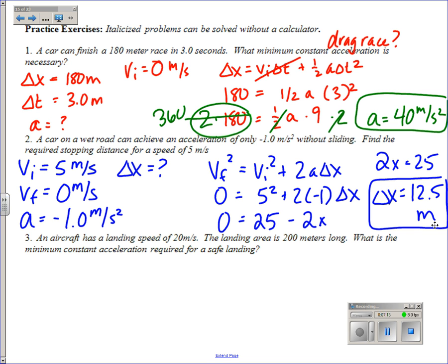Question three: an aircraft has a landing speed of 20 meters per second. The landing area is 200 meters long. What is the minimum constant acceleration required for a safe landing? This is another stopping distance question. So the aircraft is coming in at 20 meters per second, it needs to come to a safe stop. The minimum constant acceleration is our unknown, and our displacement is 200 meters.